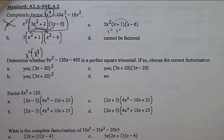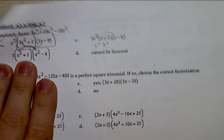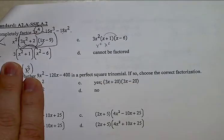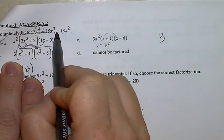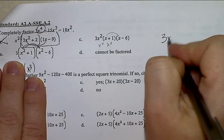It's b or d at this option. So I see a 3, a 15, and an 18. I can divide a 3 out. I also see x to the fourth, x to the third, and x squared. I can also factor out that x squared.